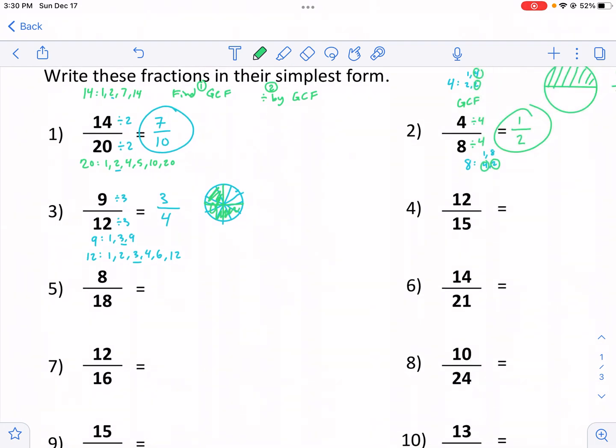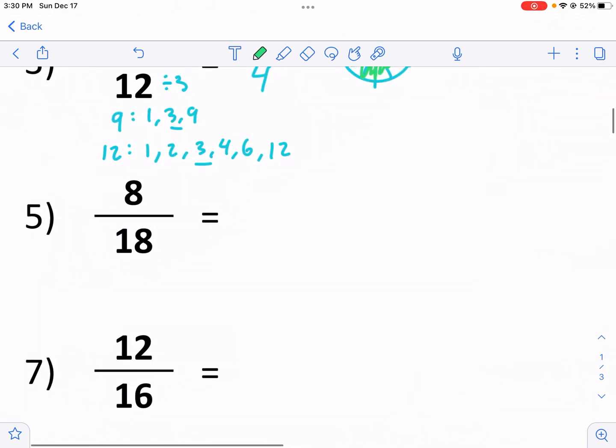Let's do one where I mess up, and then I realize I have to simplify further. So, for example, eight. Let's say, oh, I know they both have a common factor of two, so I divide the top and bottom by two, and I get four over nine, right? Is that right? Oh, I think that is their greatest common factor.